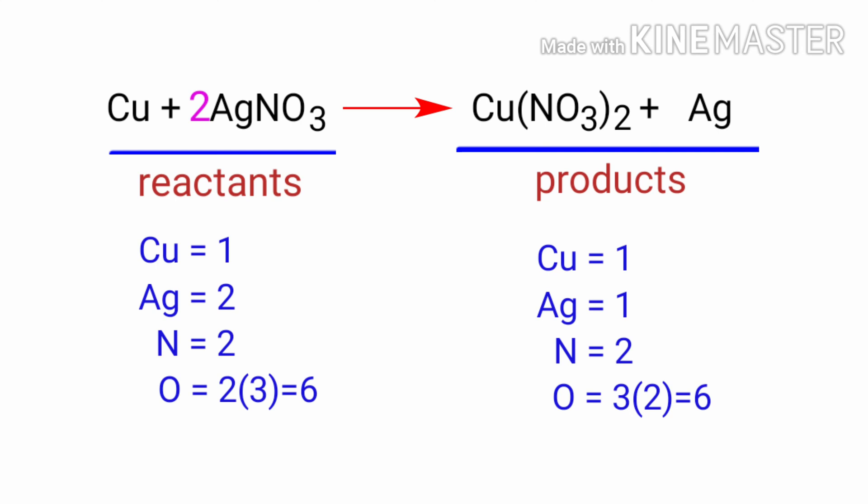The nitrogen and oxygen atoms are balanced. Now we need to balance the silver atoms. To do this we need to put a coefficient of two in front of Ag.